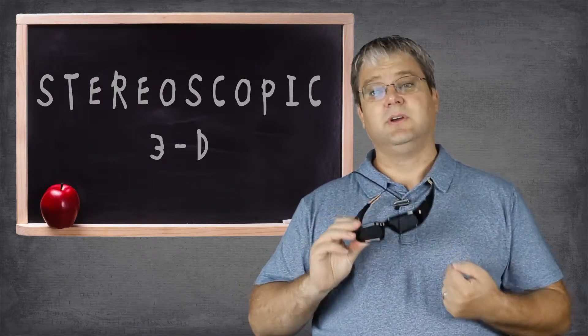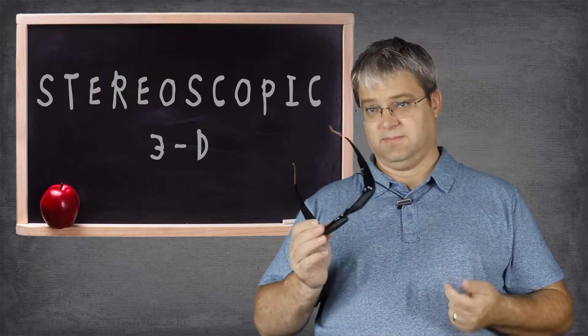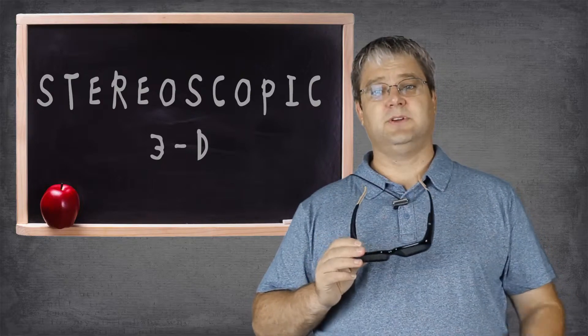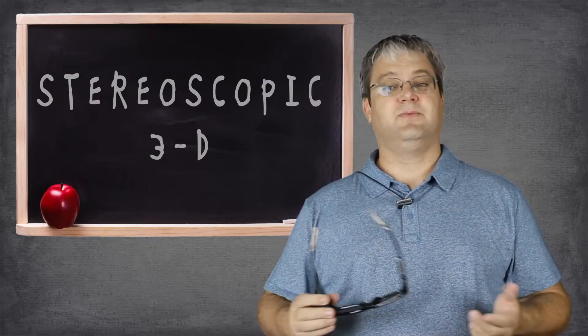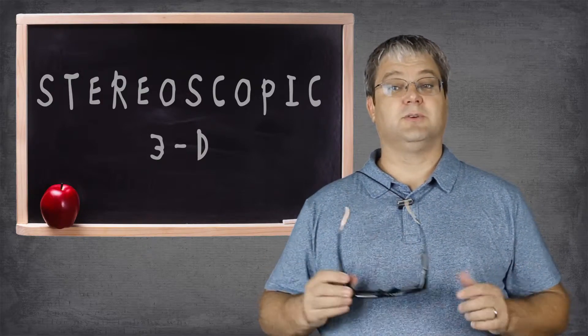The glasses filter out the images, so the left eye sees only the left image, and the same for the right. Since it takes two separate images to make the effect work, this is known as stereoscopic 3D.